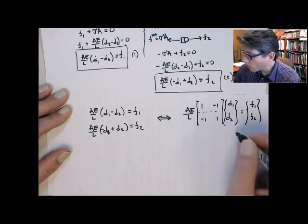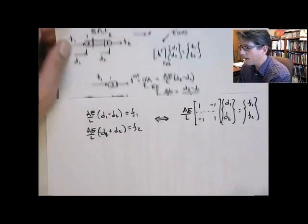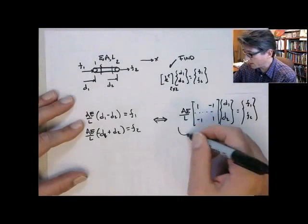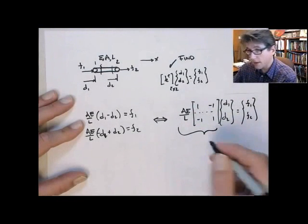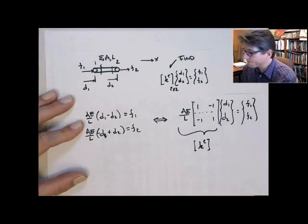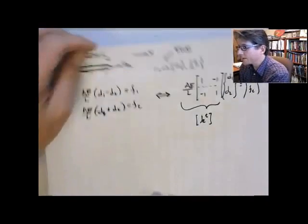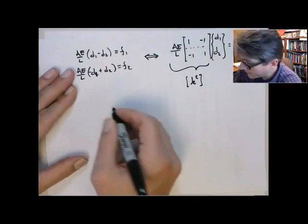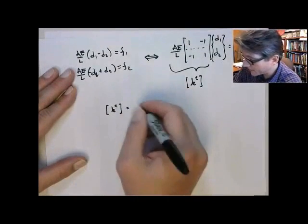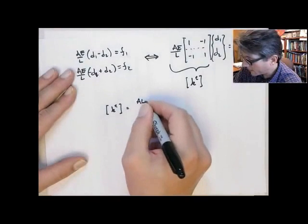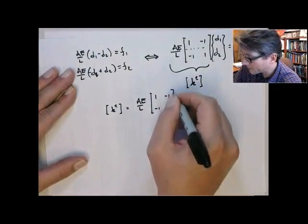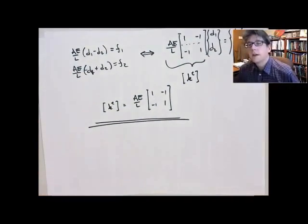So if we compare this back to what we wanted to find originally, here, we can see obviously that this quantity is the element stiffness matrix. The stiffness matrix for a one-dimensional bar element is simply AE on L, 1, minus 1, minus 1, 1. And that's it.